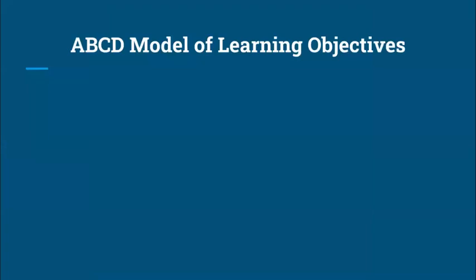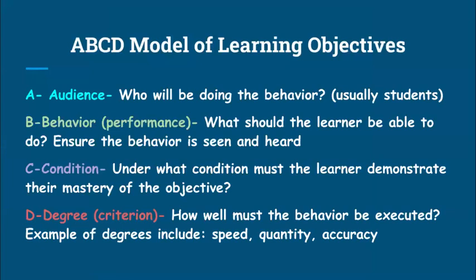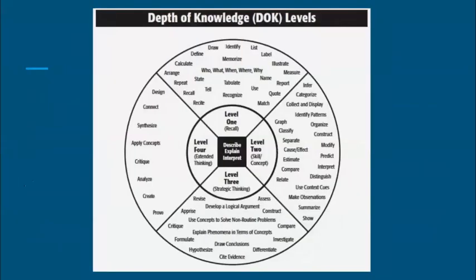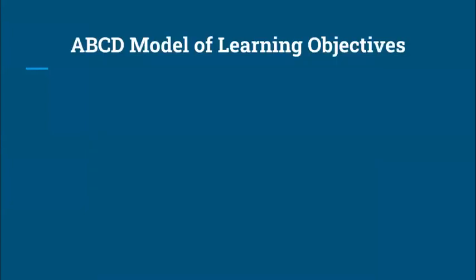To make sure your objectives are SMART, we use the ABCD model of writing objectives. A is for audience, B is for behavior, C is for condition, and D is for degree. Audience is who will be doing the behavior — which is usually the students. Behavior is the performance: what should the learner be able to do? In the behavior component, the verb is key — we just looked at DOK levels, so the behavior will be to tell, to recall, to design, to critique. The behavior is usually the verb — keep that in mind.